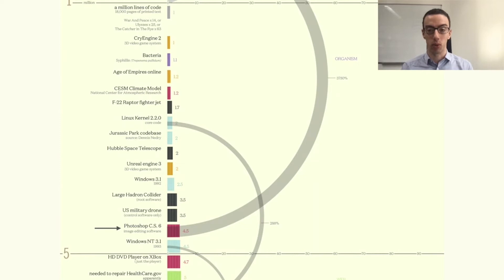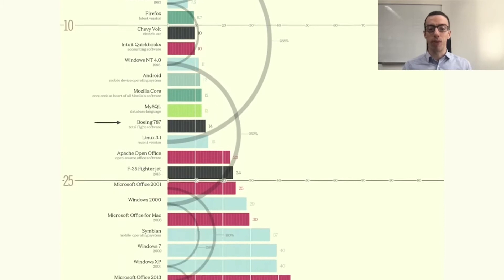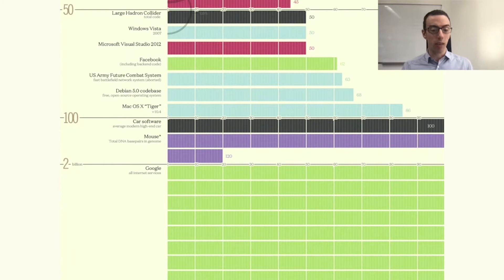So it was around 40 times bigger, and this pattern can be observed across several pieces of software. For example, if we look at the Windows operating system, it went from 4.5 million lines of code in 1993 up to 50 million lines of code for Windows Vista in 2007.